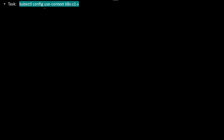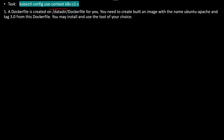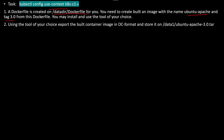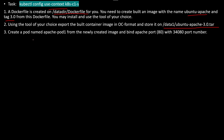There is one question where you need to apply the context. A Dockerfile is already created in this directory. You need to open this file and create a built image with the name ubuntu-apache, tagged to 3.0. Next, export the built container image in OCI format and store it in a .tar file. Third, create a pod named apache-pod-1 from the newly created image and bind Apache port 80 with port 4080.